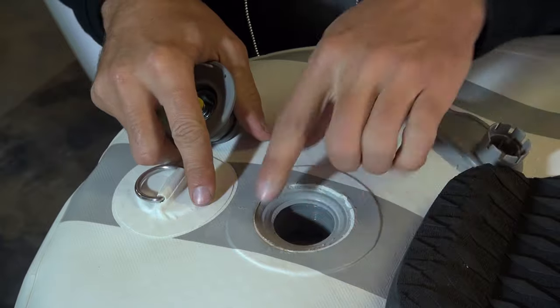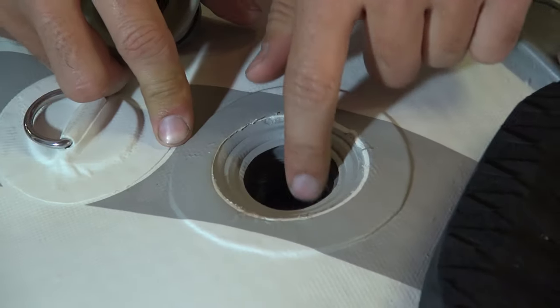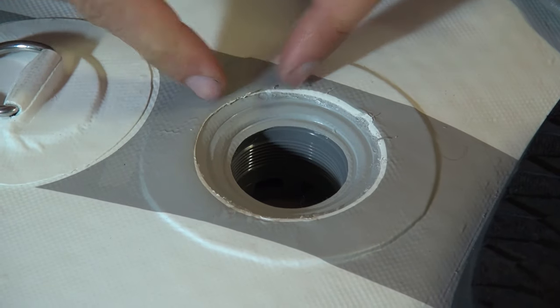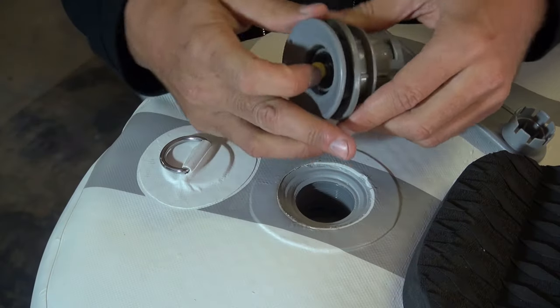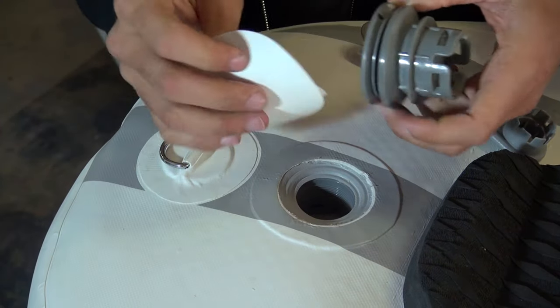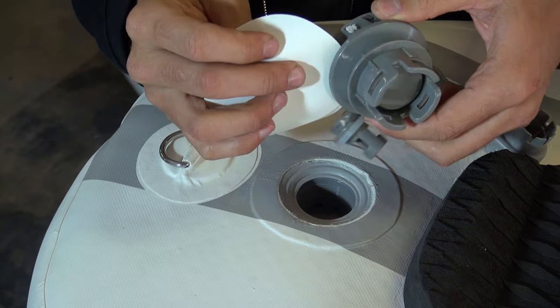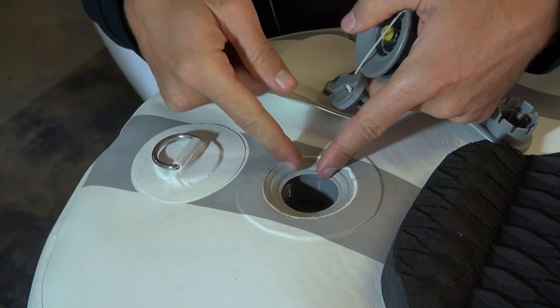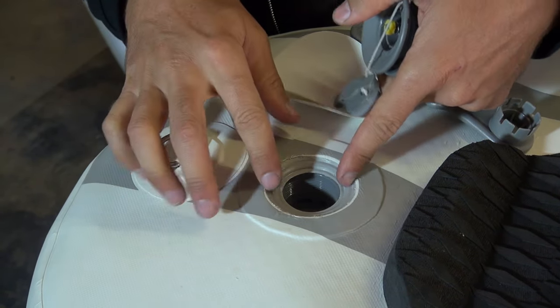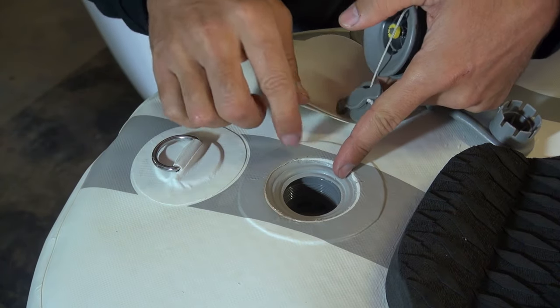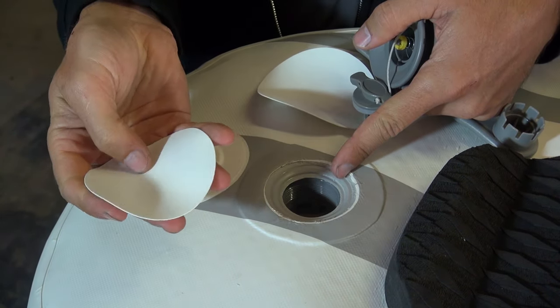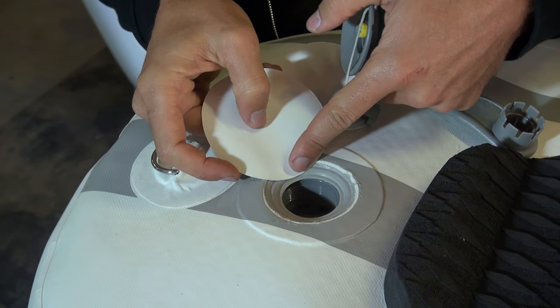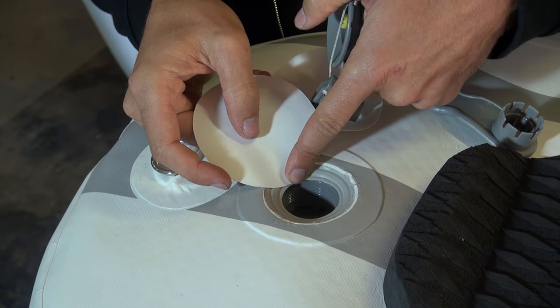The next thing you want to inspect is this edge right here. You want to make sure that there's no cracks in the PVC or it's not stretched out because you're going to need a layer of PVC in between these two like that. If there's a crack in any of this seat right here or if it's stretched out then you're going to have to take some of your repair kit right here and glue that down on the crack or on the stretched out part.